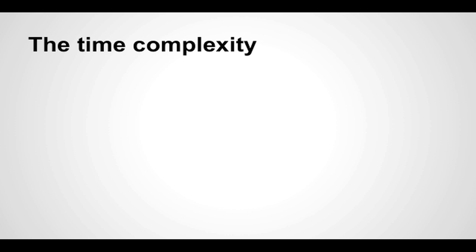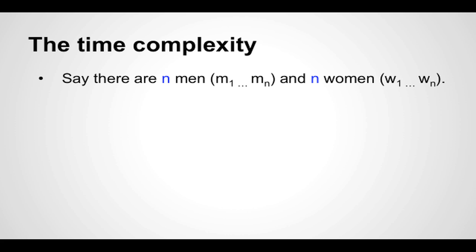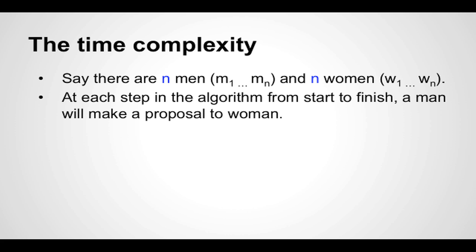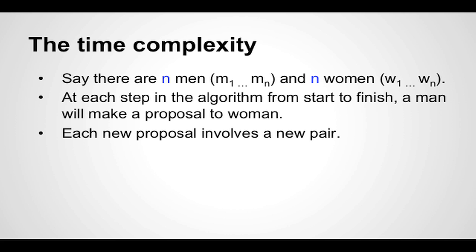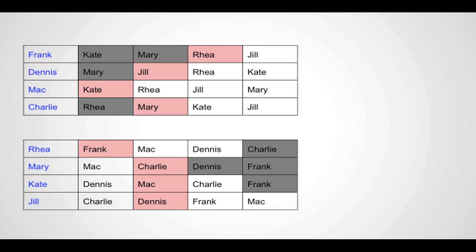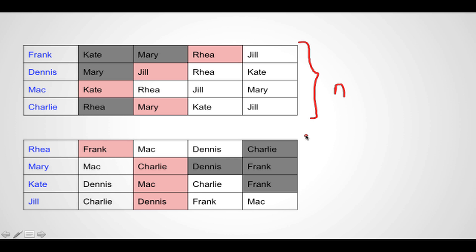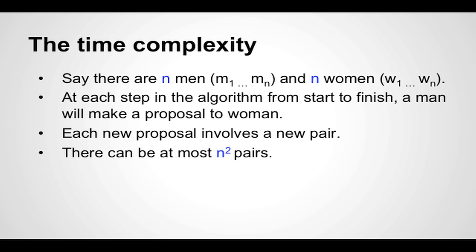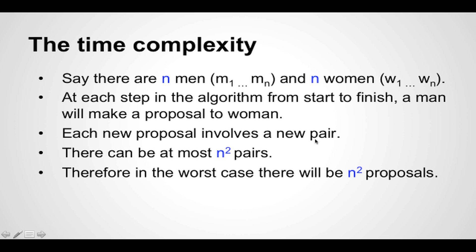Now let's look at the time complexity. Say we have n men and n women finding a stable matching. At each step, a man makes a proposal to a woman, and each new proposal involves a new pair — because a man always proposes to the next best woman on his list who has not already been proposed to. Since we have n men and n women, at most we can have n² pairs. Since each new proposal involves a new pair, in the worst case there are n² proposals, and therefore the algorithm is O(n²).